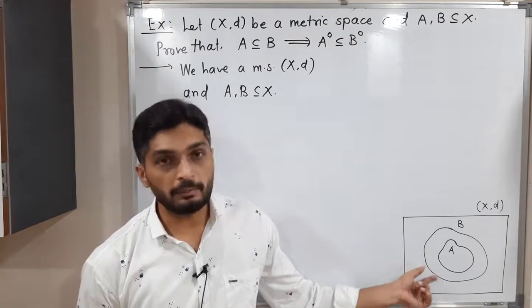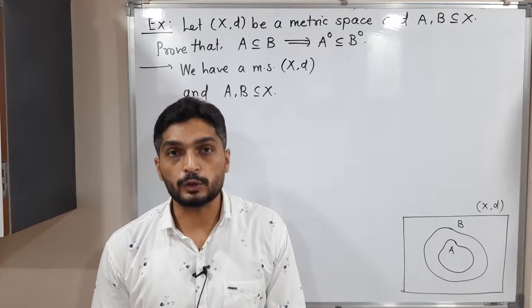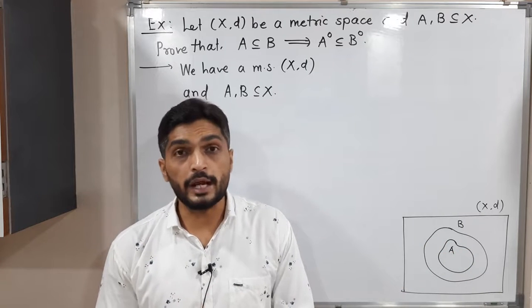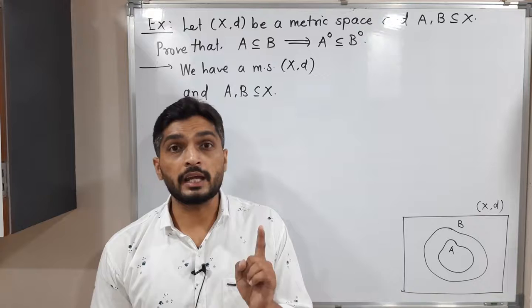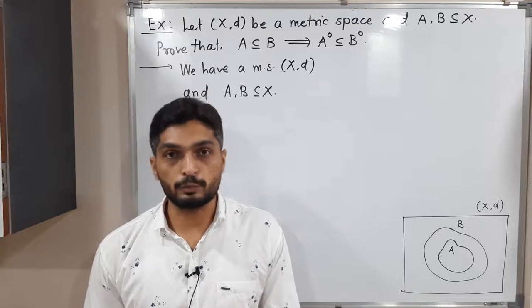And what is the relation between them? A is a subset of B. This is a very important thing they have given to us. And we have to prove that if A ⊆ B, then A° ⊆ B°.